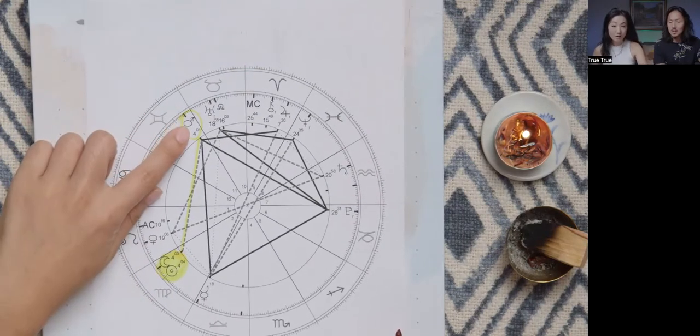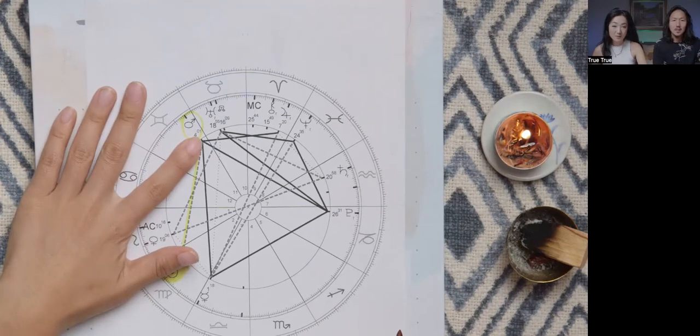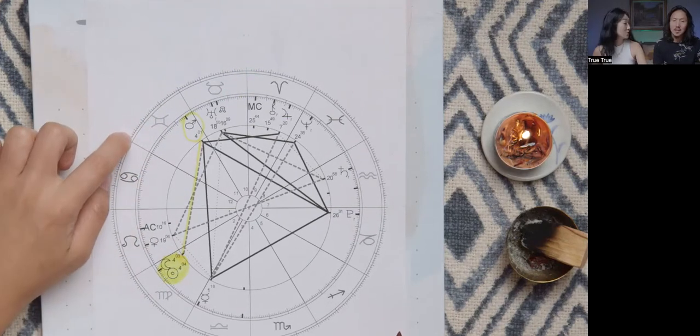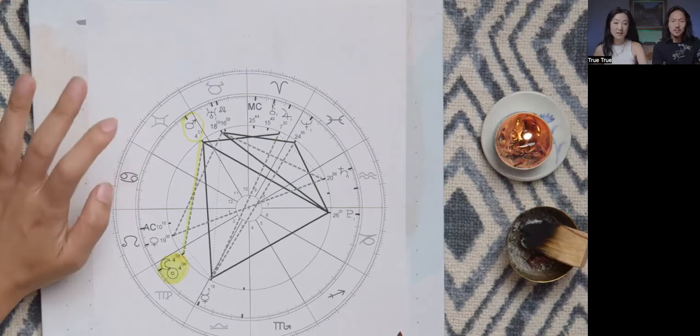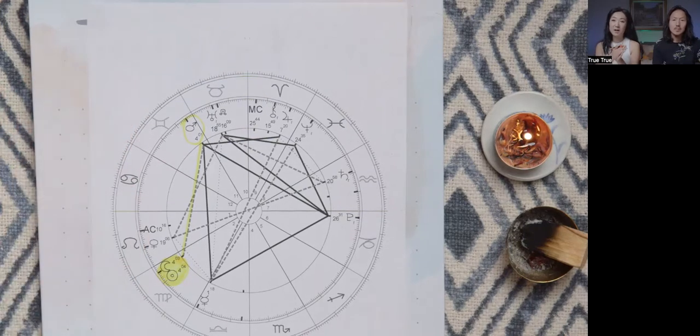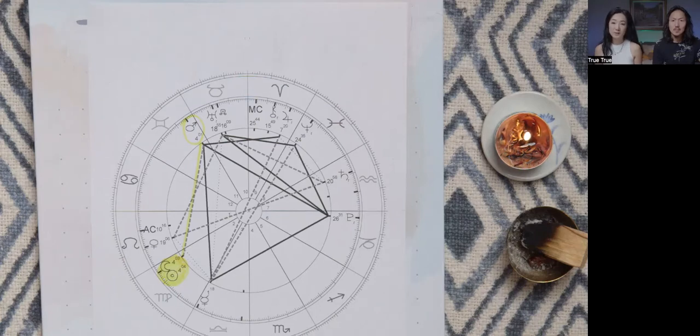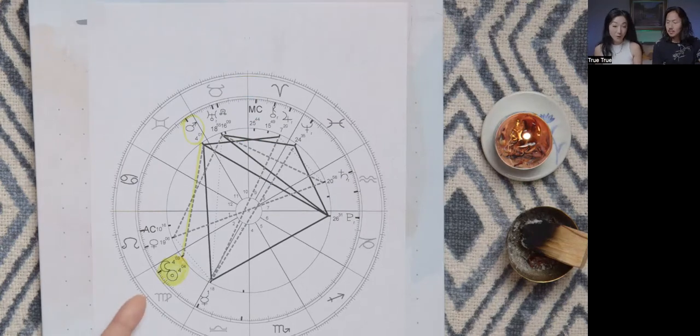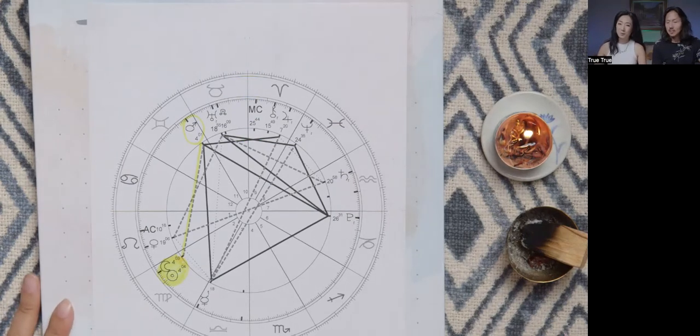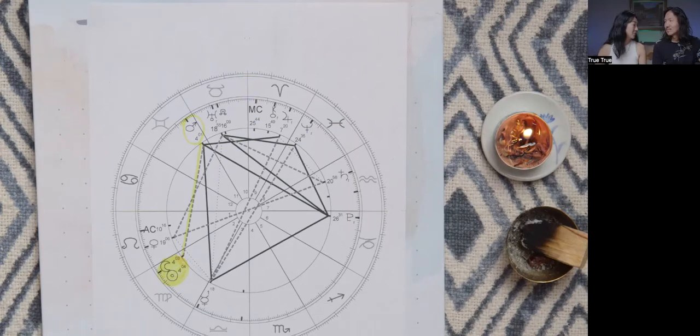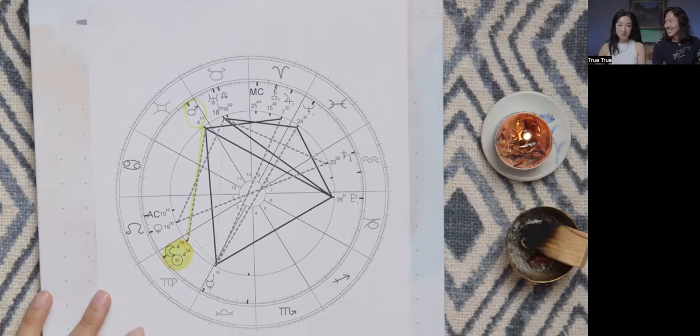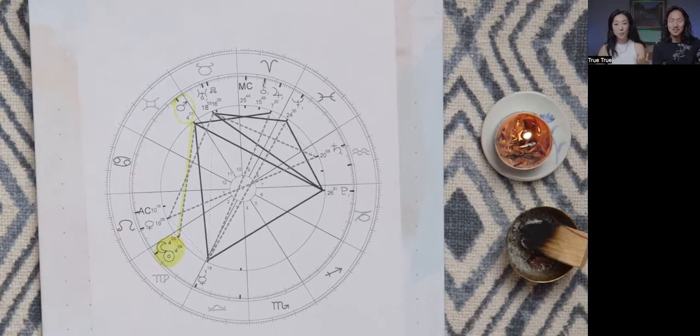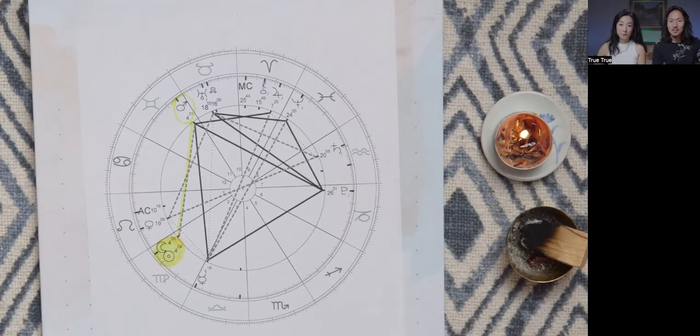Mars wants to do everything inside of Gemini because Gemini is about seeing all the polarity. Mars just wants to experience every possible situation. But Virgo - have you ever worked with a Virgo person? Let's talk about Virgo actually.